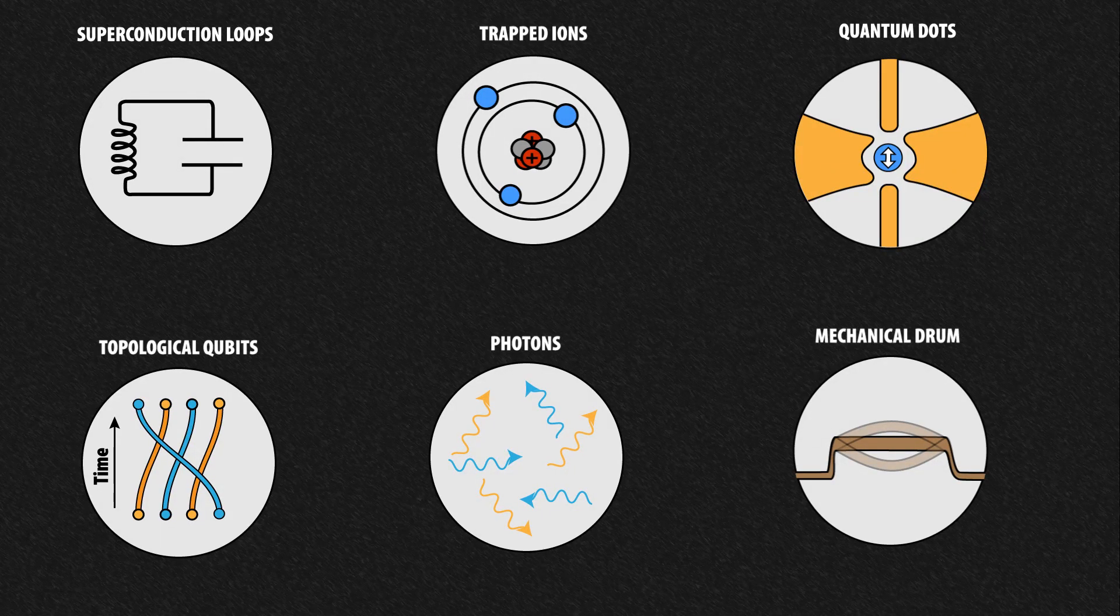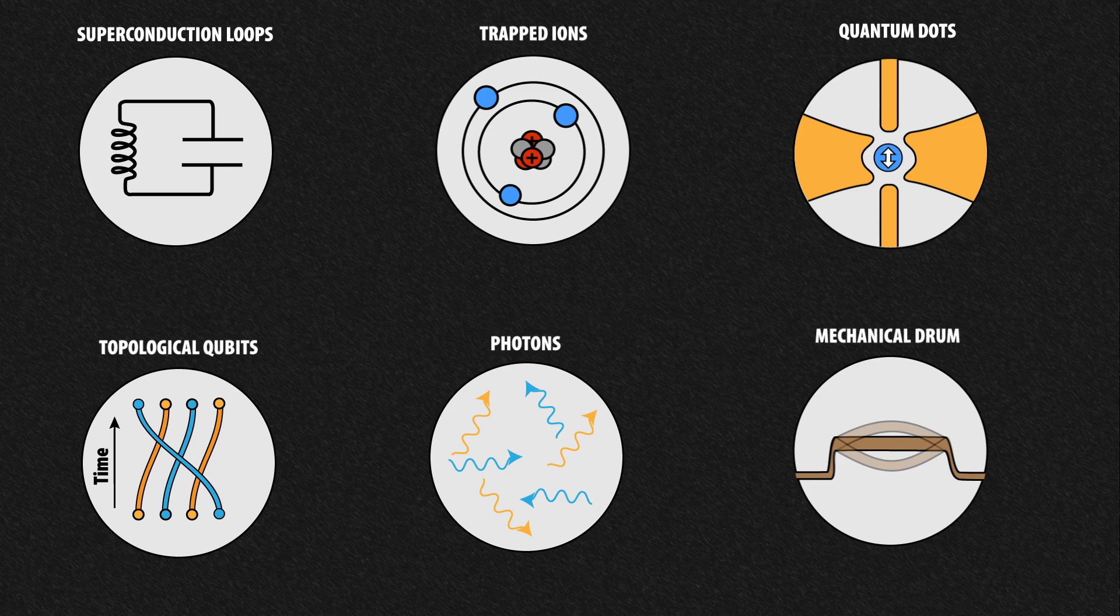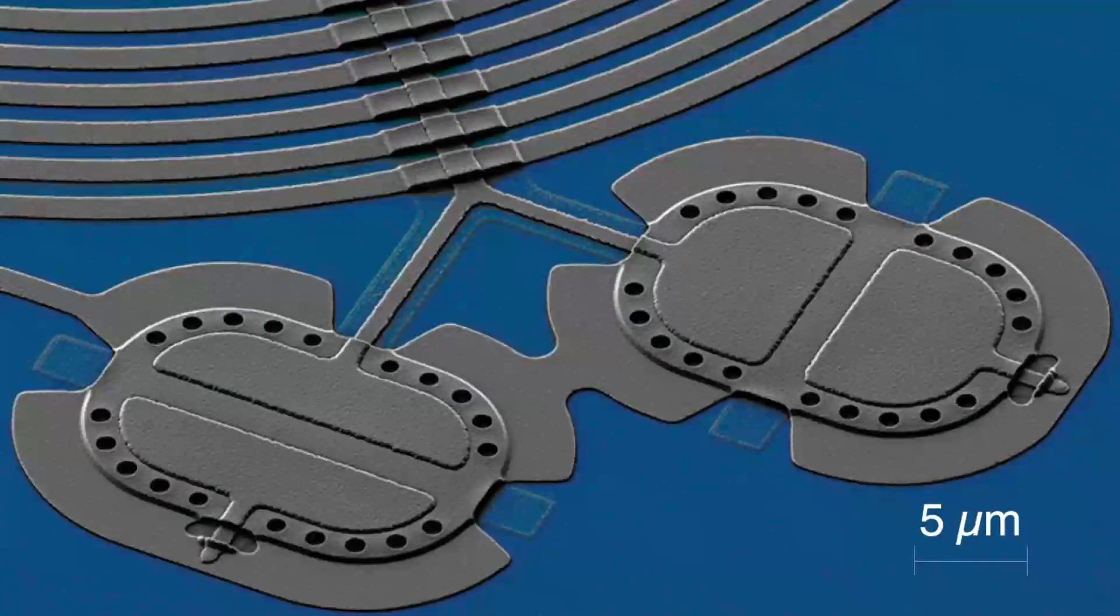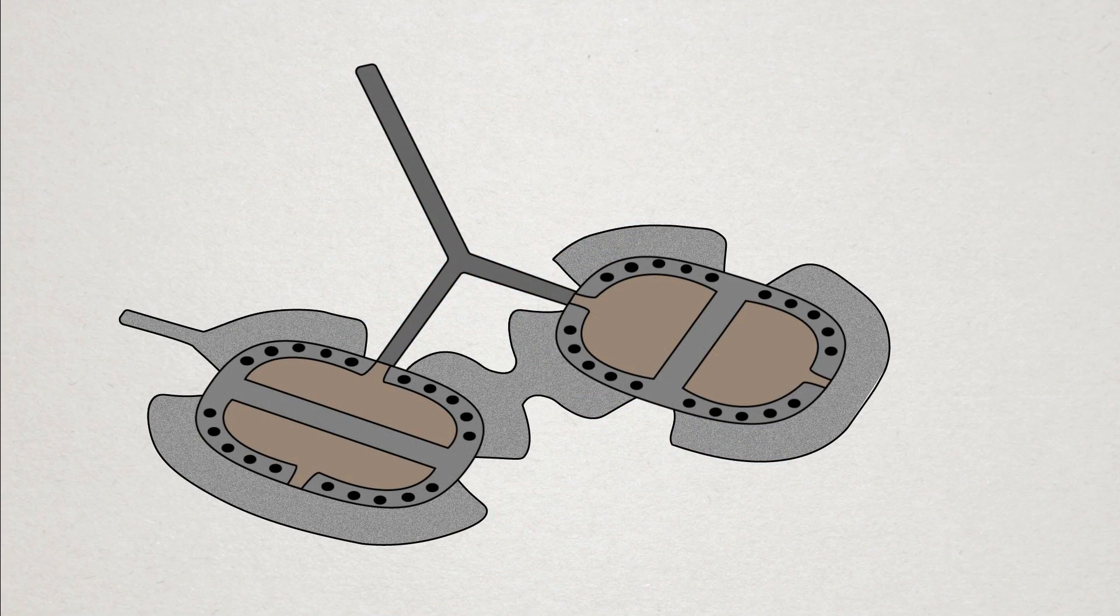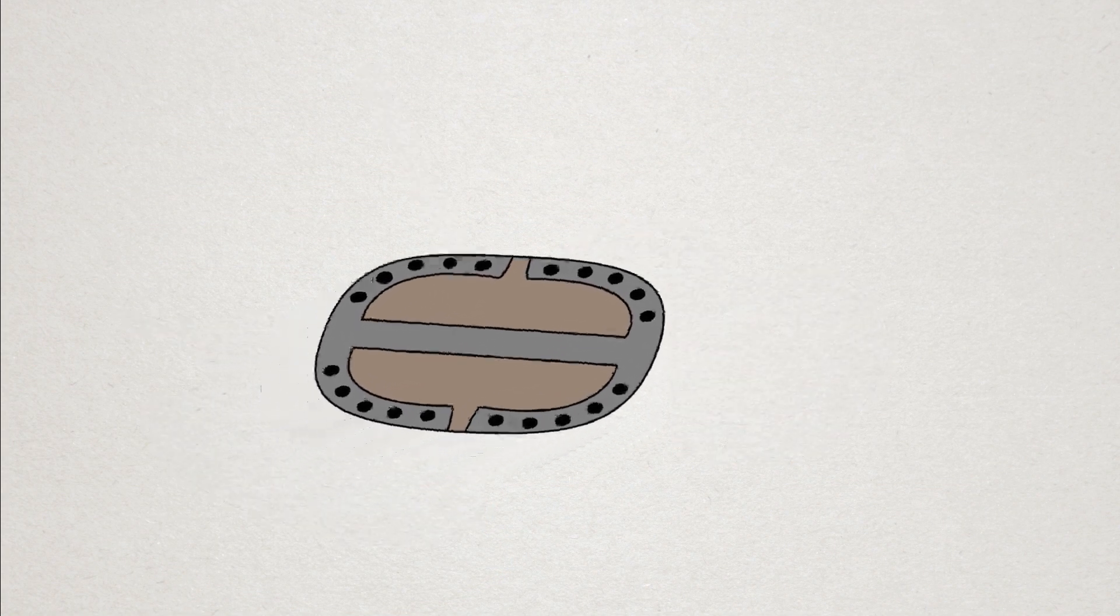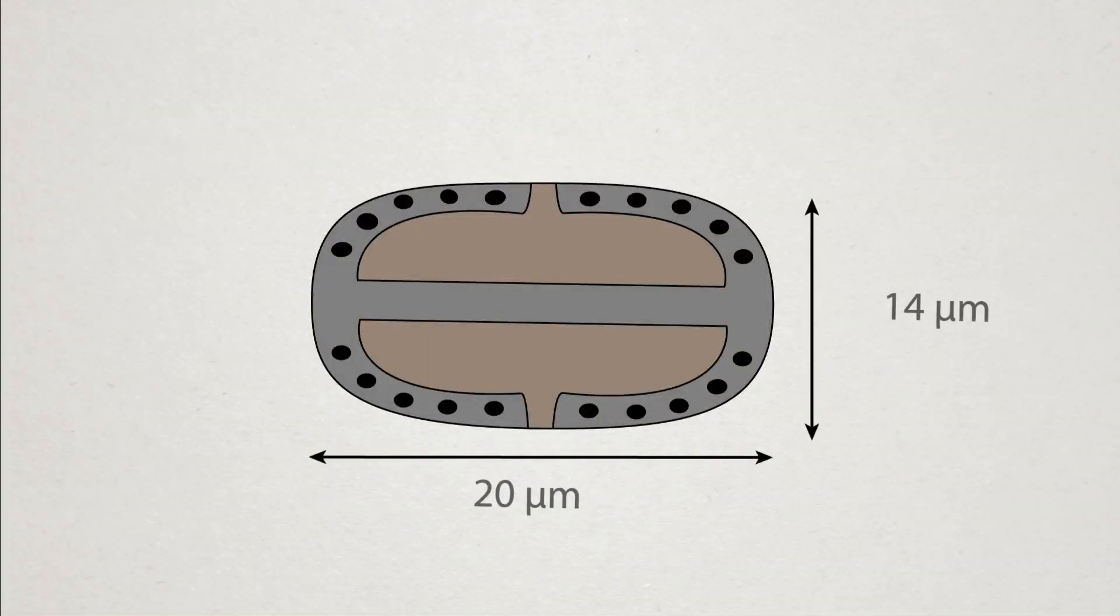So, how did these scientists manage to entangle two micro drums? First, they had to fabricate the drums themselves, which are thin 100 nanometer thick aluminum sheets that are 20 micron long and 14 micron wide, which in total weighs around 70 picograms.